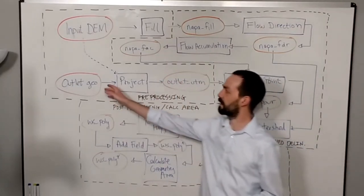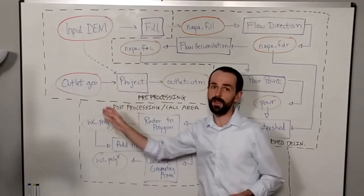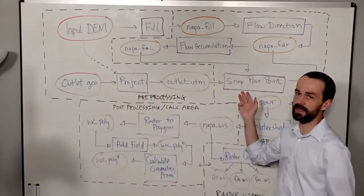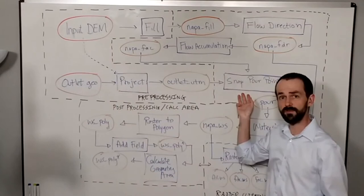A lot of this is based on these two inputs. Some of it is based on the inputs that go into the snap pour point, such as the search radius.